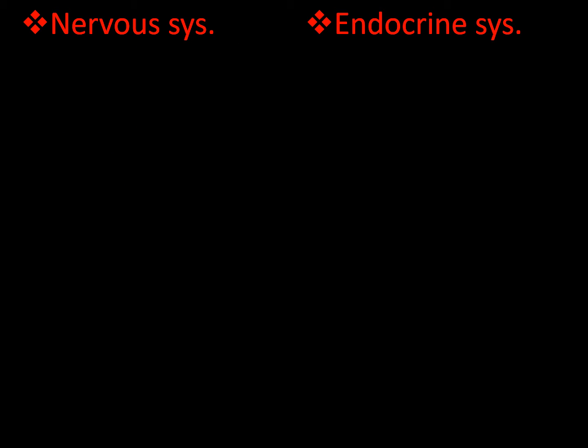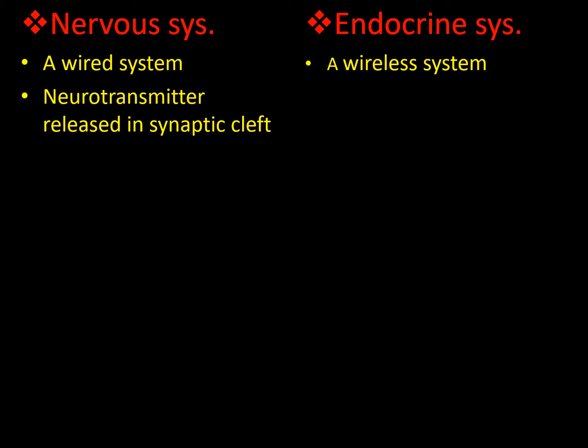There are some differences between the nervous system and the endocrine system. The nervous system is a wired system — it is composed of nerve fibers traveling across our body like wires. The endocrine system, by contrast, is a wireless system; it does not have axon-like long wired structures but has glands. The neurotransmitter is released in the synaptic cleft.